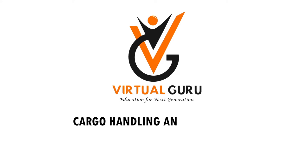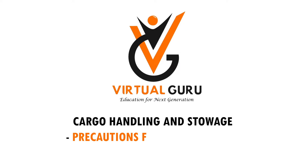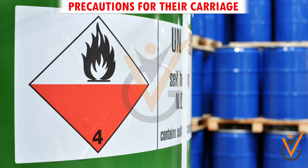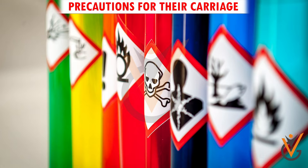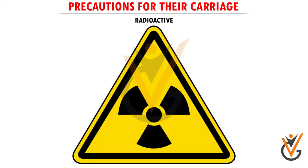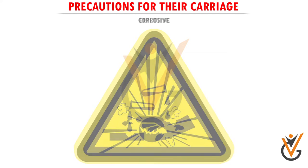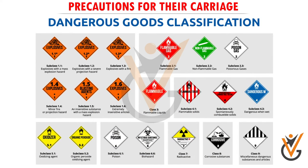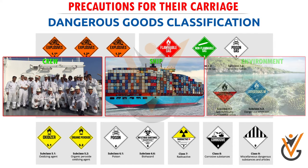Cargo handling and storage precautions for their carriage. Dangerous or hazardous substances can be identified by a label. There are different types of labels indicating the hazards, for example toxic, radioactive, explosive, corrosive, and others. All goods are classified according to the danger they pose to the crew, ship, and environment.